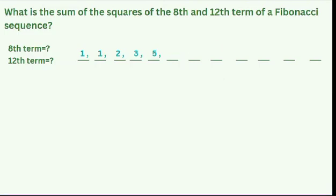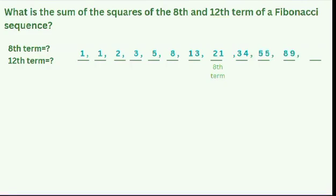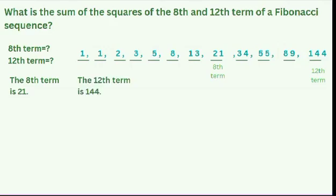We're just gonna continue this to find the 12th term of the Fibonacci Sequence. We add the two preceding terms to find the next term. Here, the 12th term is found as 55 plus 89 is equal to 144. So we have the value of the 8th term, which is 21, and the 12th term, which is 144.